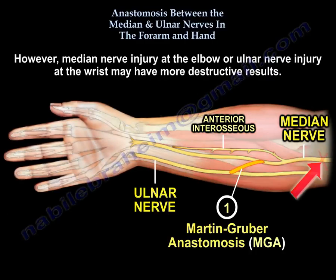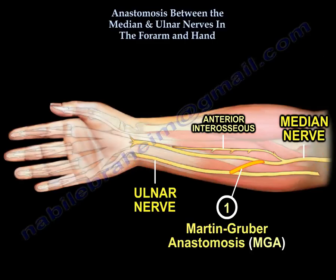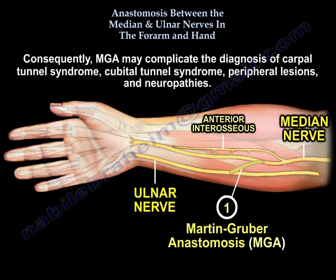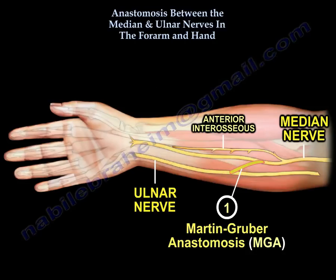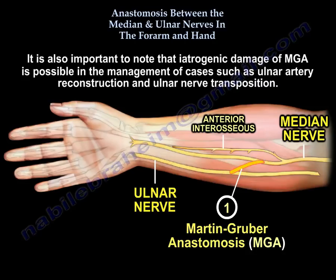However, median nerve injury at the elbow or ulnar nerve injury at the wrist may have more destructive results. Consequently, Martin Gruber may complicate the diagnosis of carpal tunnel syndrome, cubital tunnel syndrome, peripheral lesions, and neuropathies. It is also important to note that iatrogenic damage of Martin Gruber is possible in the management of cases such as ulnar artery reconstruction and ulnar nerve transposition.